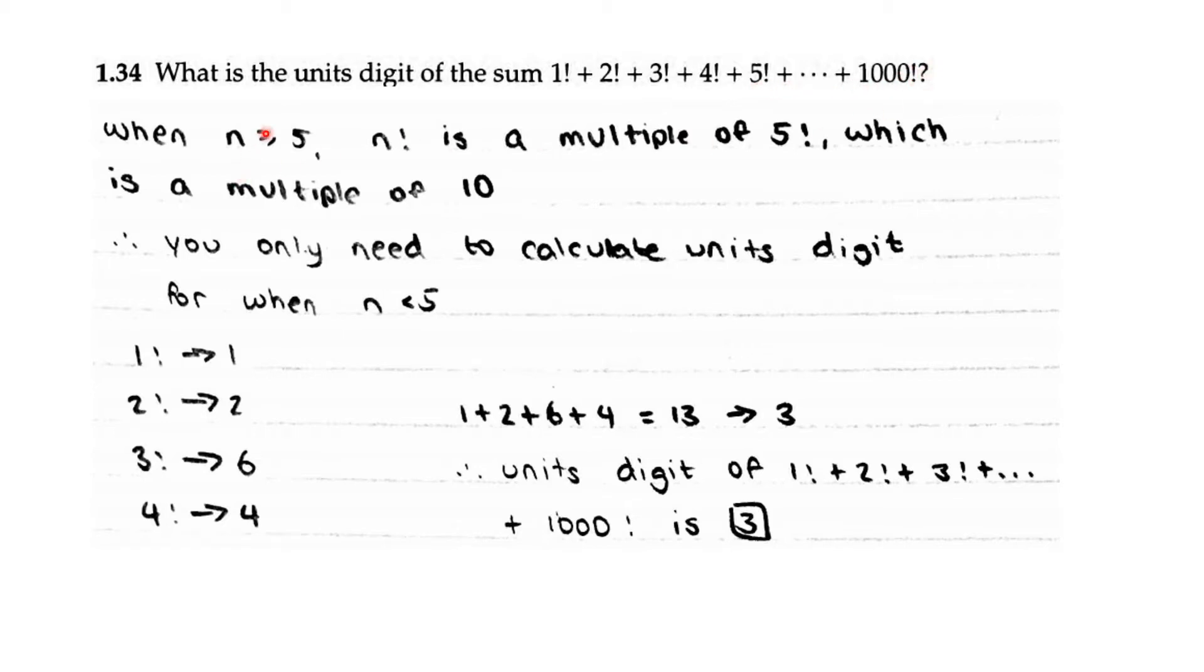When n is greater than or equal to 5, n factorial is a multiple of 5 factorial because it includes 5 factorial inside n factorial. And 5 factorial is a multiple of 10.